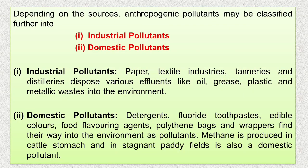Depending on the source, anthropogenic pollutants may be classified into industrial pollutants and domestic pollutants. Industrial pollutants — from paper, textile, and distillery industries — dispose various effluents like oil, grease, plastic, and metallic waste into the environment. Domestic pollutants include detergents, fluoride toothpaste, edible colors, flavoring agents, polythene bags, and plastic wrappers. We need to think about reducing our use of plastic items and managing plastic waste responsibly.